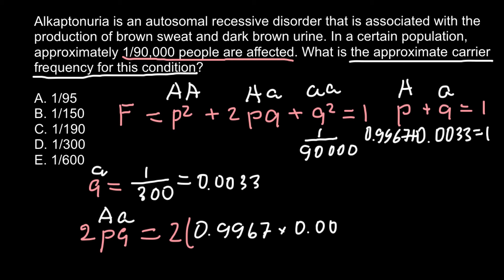And we have to multiply 2 by number p, which is 0.9967, and by number q, which is 0.0033, and the answer here would be 0.0066.